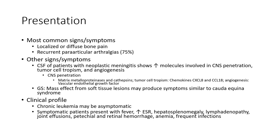Mass effect from soft tissue: leukemia may produce symptoms similar to Cauda Equina syndrome. Clinical profile — chronic leukemia may be asymptomatic. Symptomatic patients present with fever, increased ESR, hepatosplenomegaly, lymphadenopathy, joint pain in children, periarticular involvement, hemorrhage, anemia, and frequent infection.